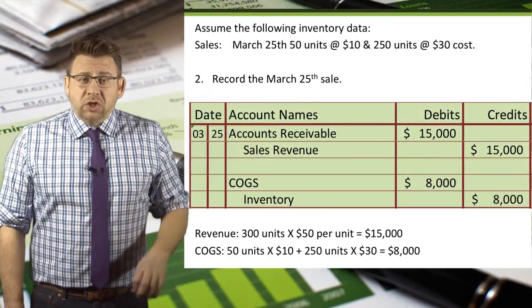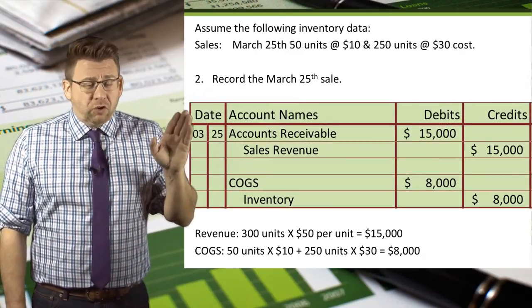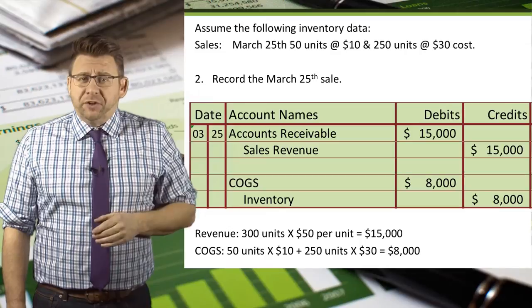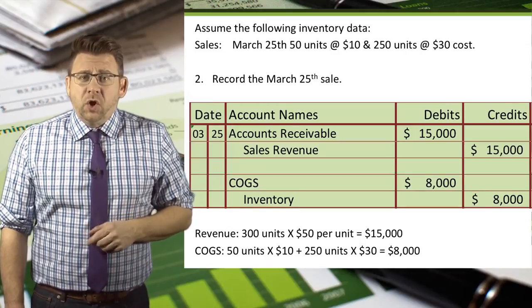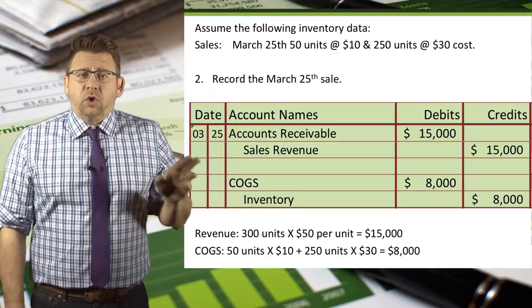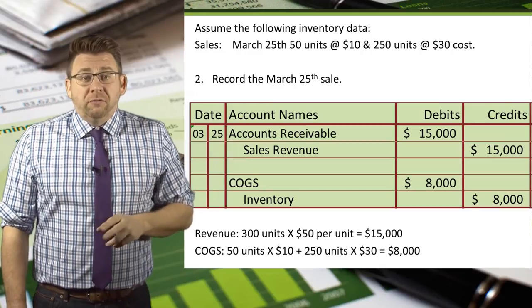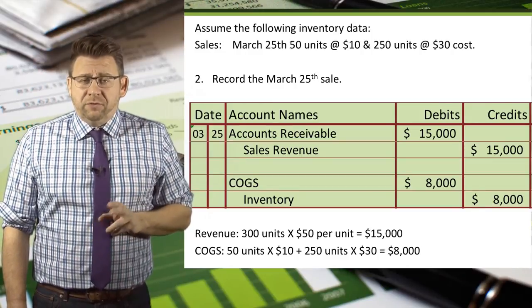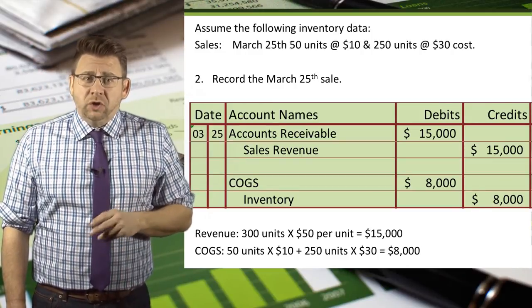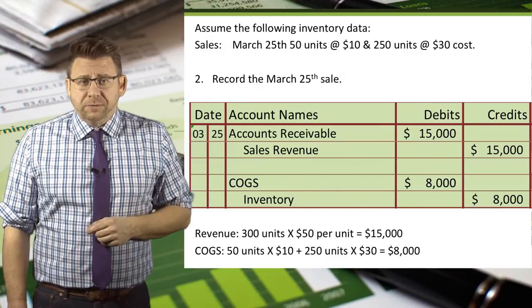So again, we debit accounts receivable and credit sales revenue for $15,000. We also debit cost of goods sold and credit inventory for the cost of the inventory items sold, which is $8,000.